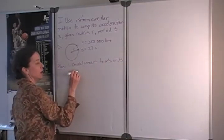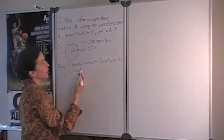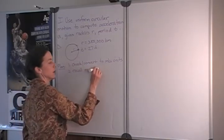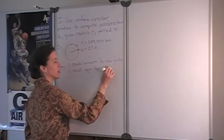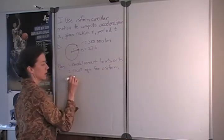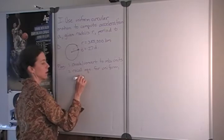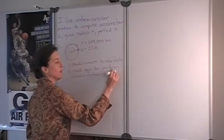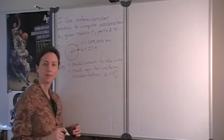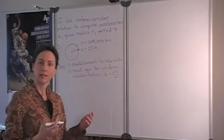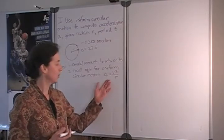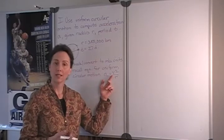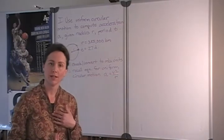Then we can recall the relationship used to describe uniform circular motion which is that the acceleration is equal to the square of the velocity over the radius. If we take a moment to consider what we've been given and what terms are included in this expression for uniform circular motion we see that velocity is required but we were not given velocity.